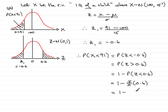So that means that I can pop this in here as 1 minus phi of 0.6, which we saw was 0.7257. Working that out, we get 0.2743.